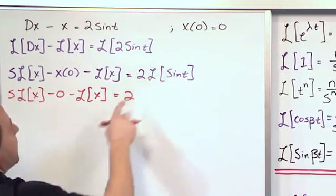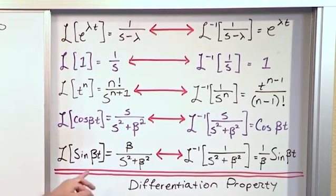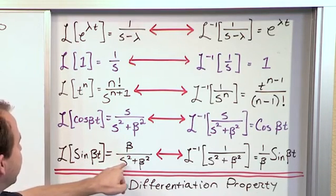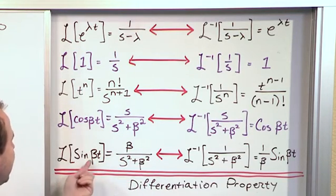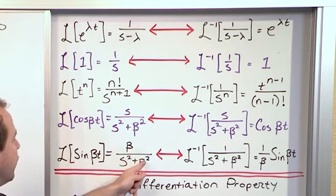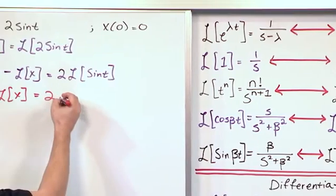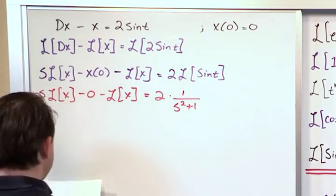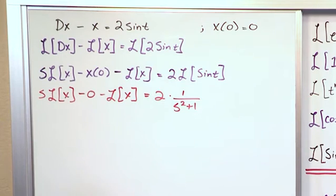What's the Laplace transform of sine of t? Well, if we look over here, the Laplace transform of sine of beta times t is beta over s squared plus beta squared. In this case, beta is one. So it's going to be one over s squared plus one. So what we'll get here is we'll have one over s squared plus one. That's going to be that Laplace transform that we care about.